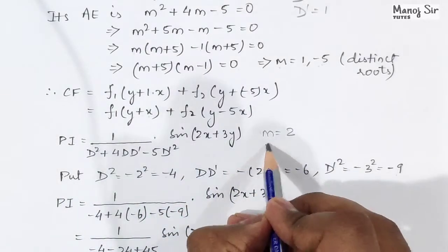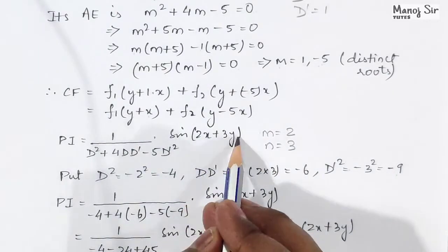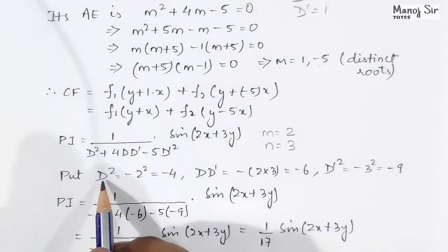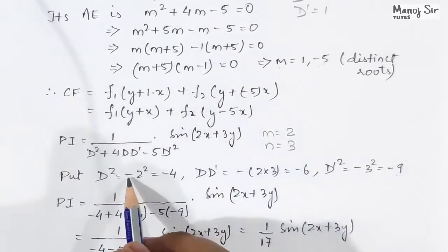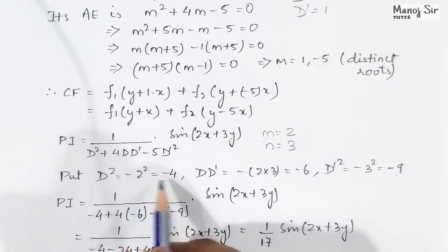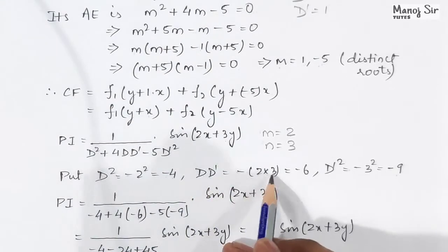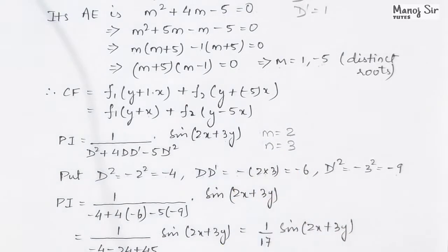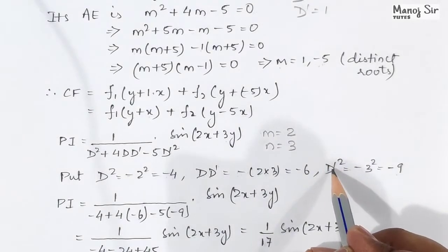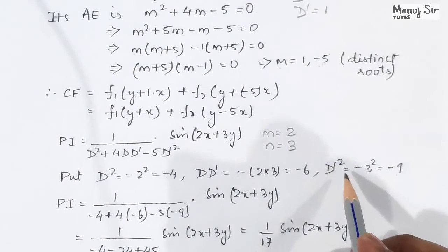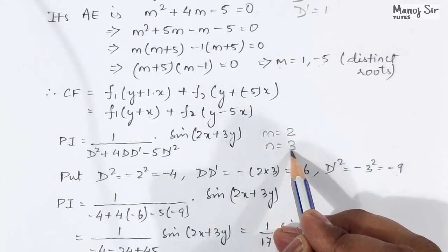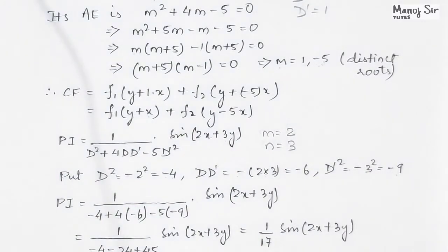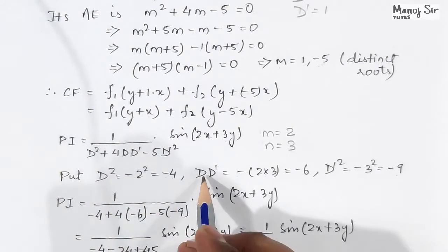Comparing with sin(mx + ny), m = 2 and n = 3. Now substitute: D² = -m² = -(2²) = -4; DD' = -(m×n) = -(2×3) = -6; D'² = -n² = -(3²) = -9. So we now have the values of D², DD', and D'² to substitute into the PI expression.